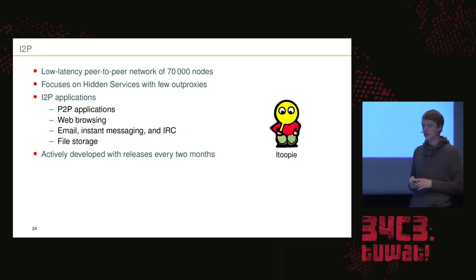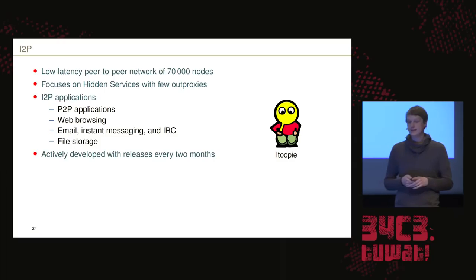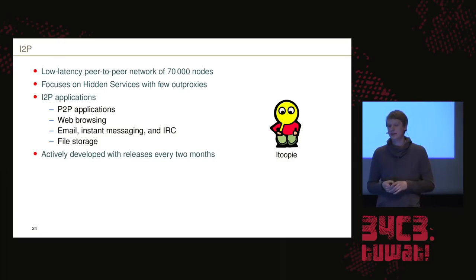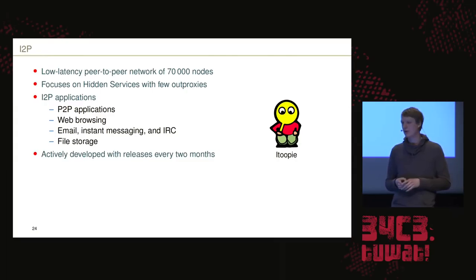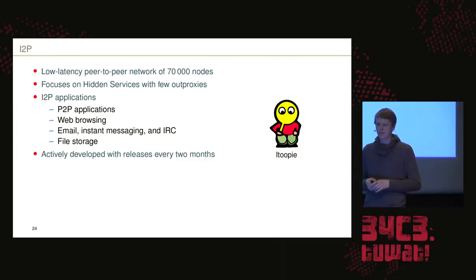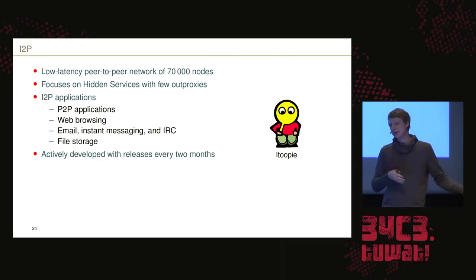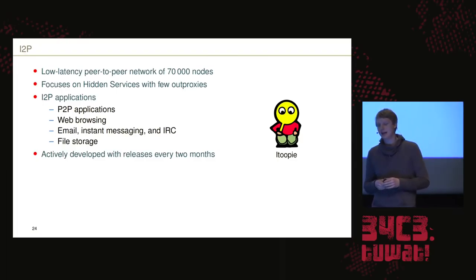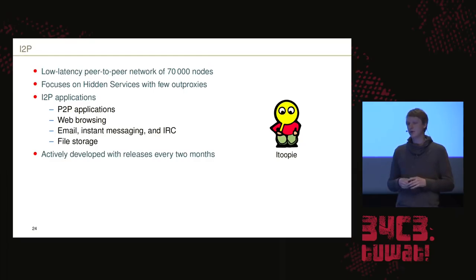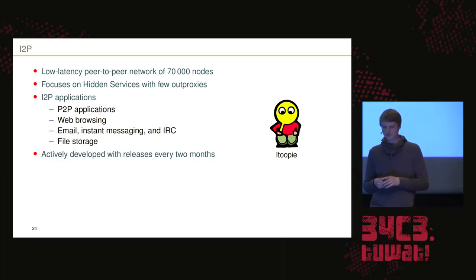Let's have a look at I2P. I2P is a low-latency peer-to-peer network with approximately 70,000 nodes. In comparison, Tor has around about 7,000 nodes. I2P is larger by node count, but Tor in general has more users — a few millions per day.